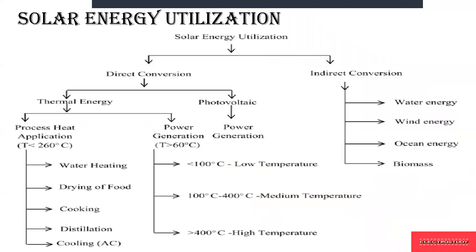Looking at solar energy utilization, it is divided into direct and indirect conversion. From solar energy, you can convert into different kinds of energies through direct and indirect processes. The indirect process deals with water, wind, ocean, and biomass energy, whereas direct conversion involves thermal energy and photovoltaic.